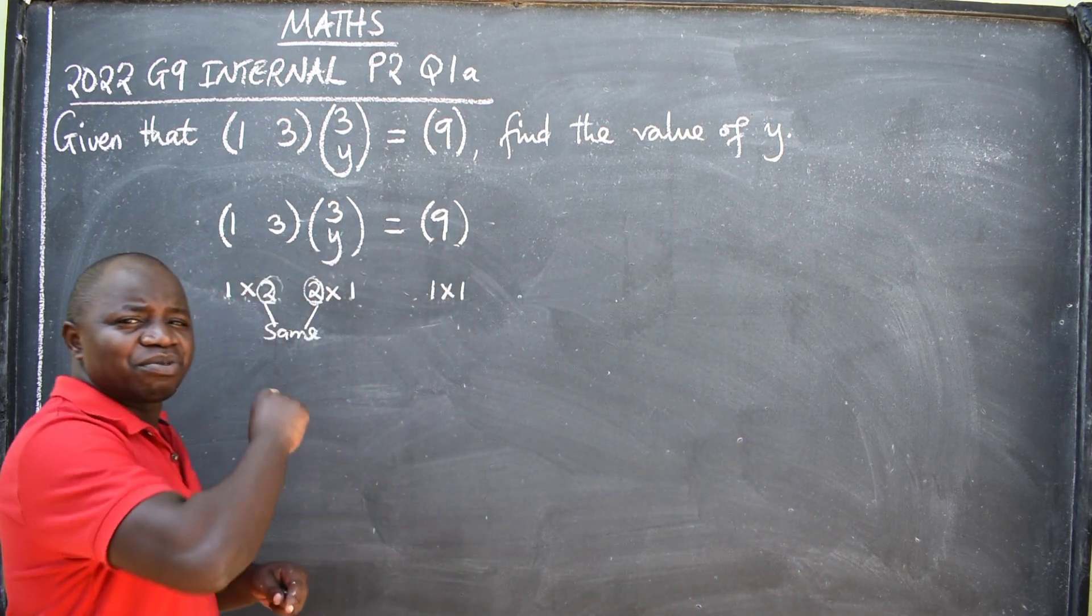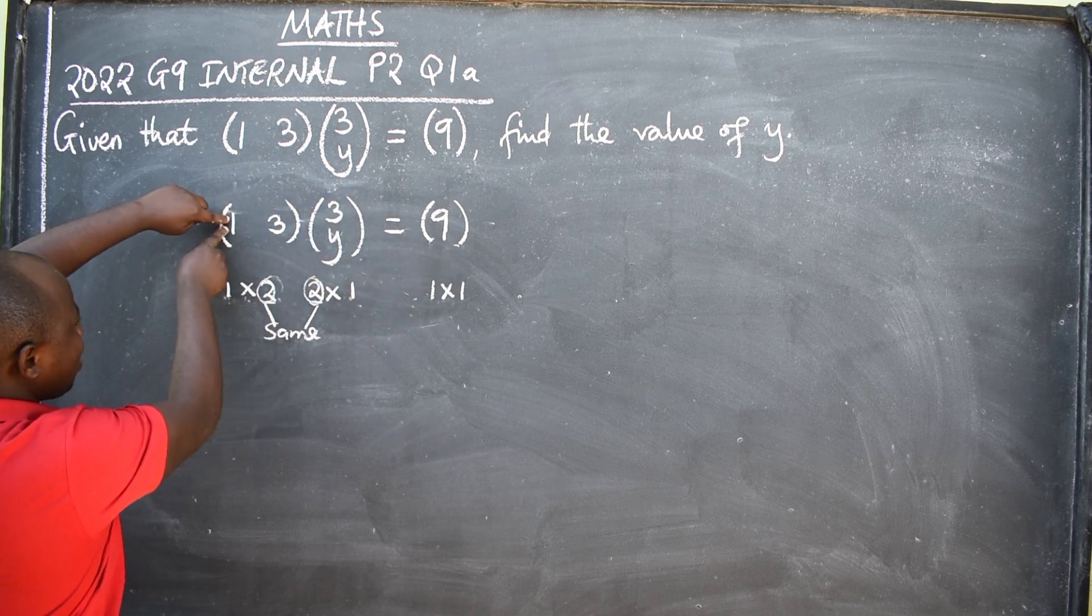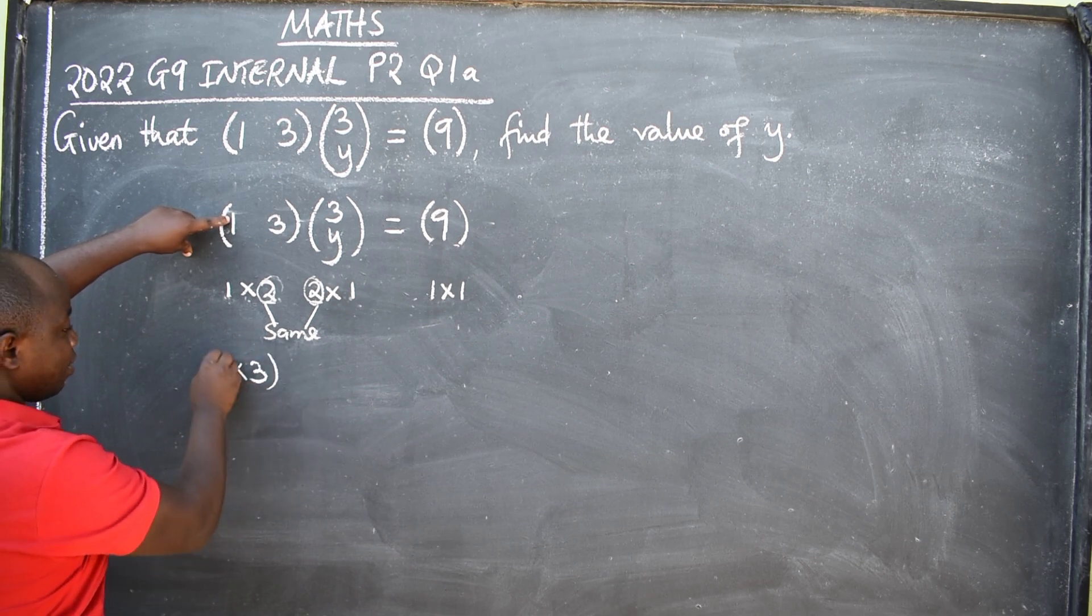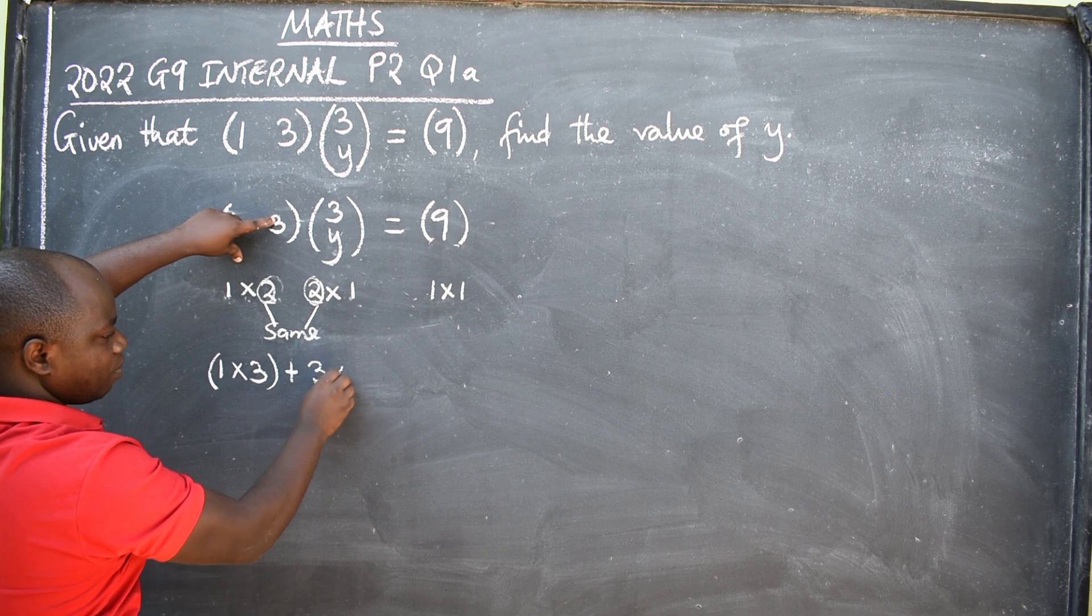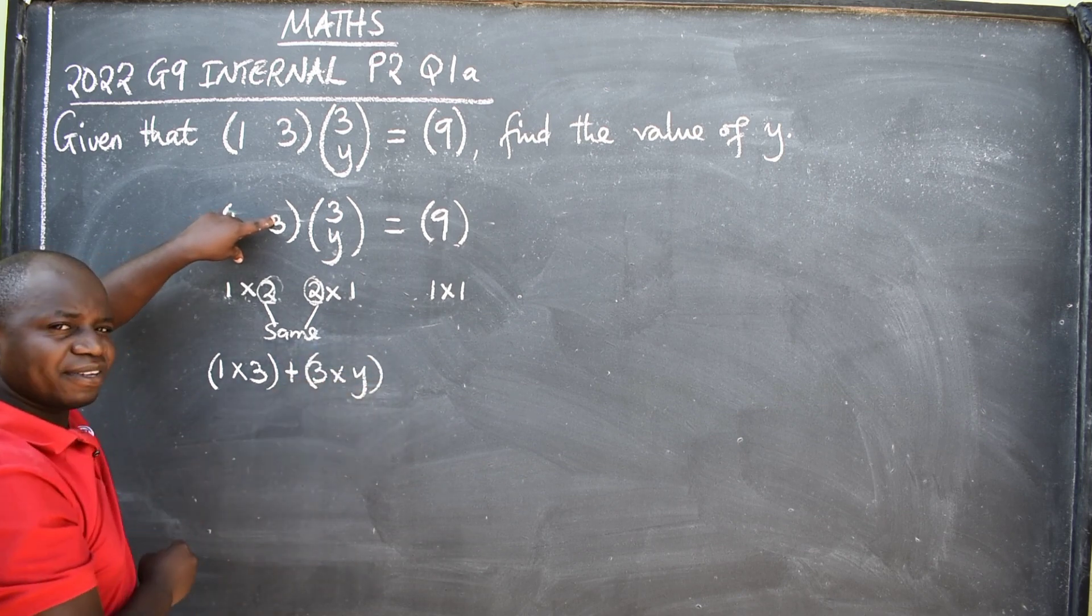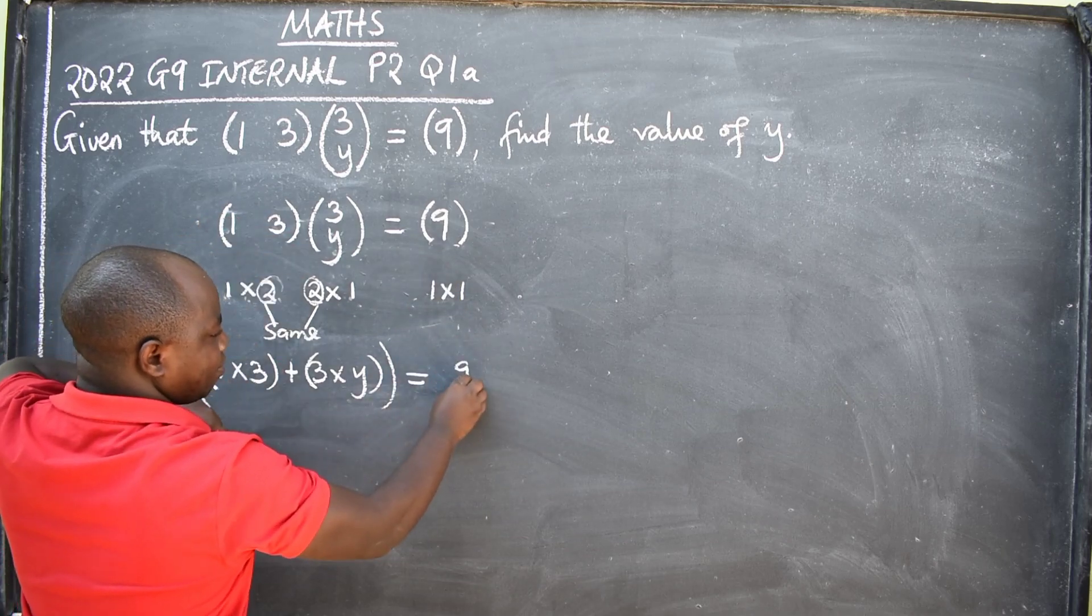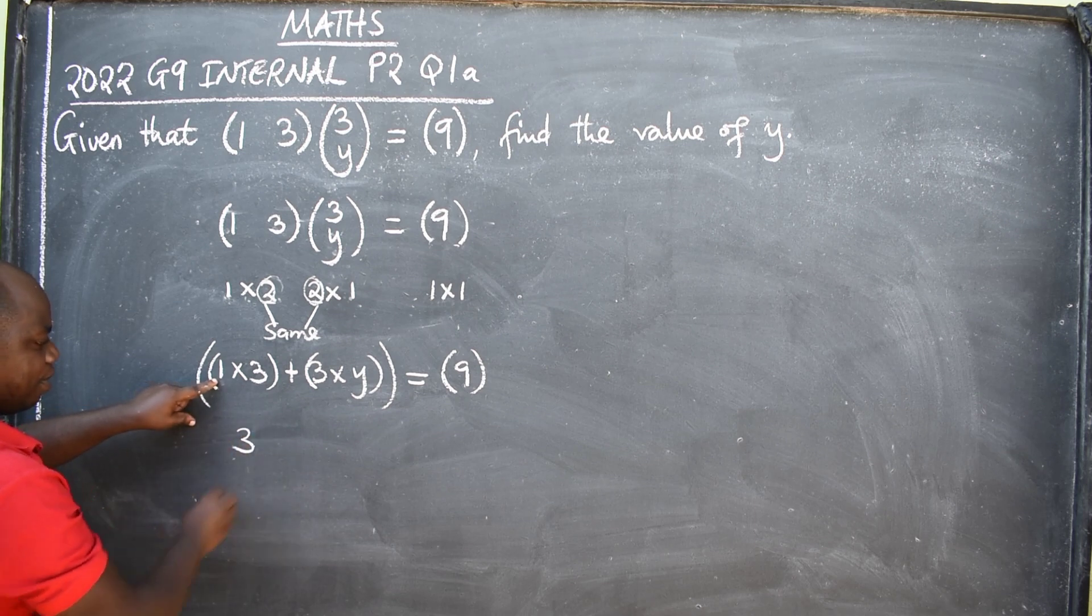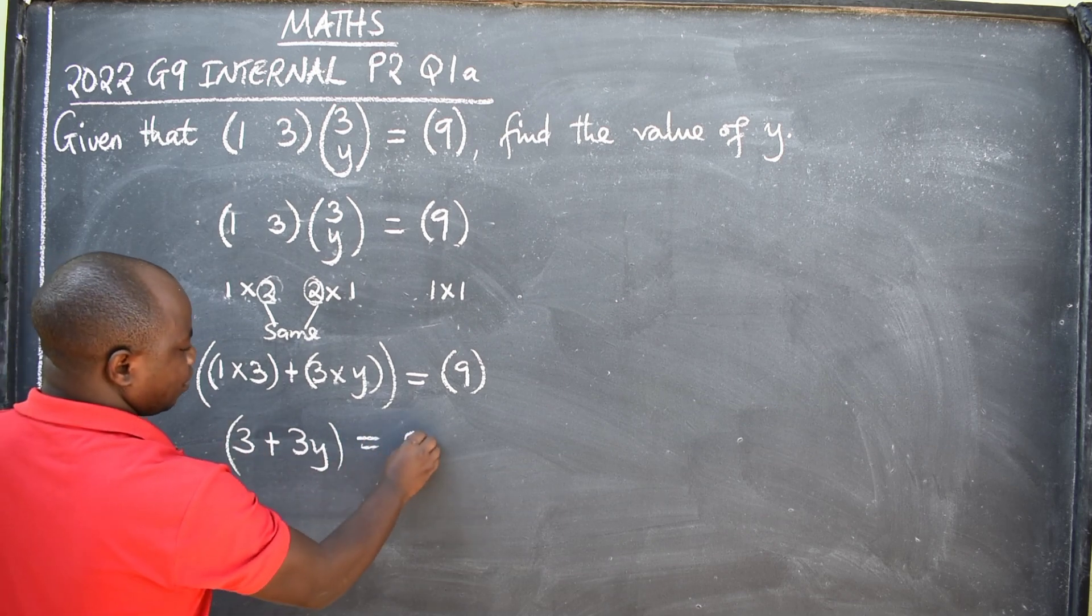How do we multiply? Row by column. So, row by column. So, one times three. One times three. Have you seen that? Plus three times y. Three times y. Like this. Is equal to nine. We simplify here. One times three is three. Plus three times y is three y. Is equal to nine.